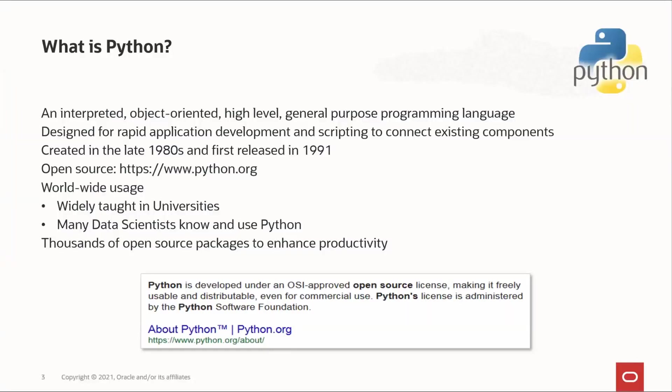In case you're new to Python, Python is an interpreted, object-oriented, high-level, and general-purpose programming language. It's an open source project designed for rapid application development and scripting to connect existing components together. Python also has a rich set of packages for data exploration, preparation, and machine learning — well over 300,000. Python is developed under an OSI-approved open source license, making it freely usable and distributable, even for commercial use.